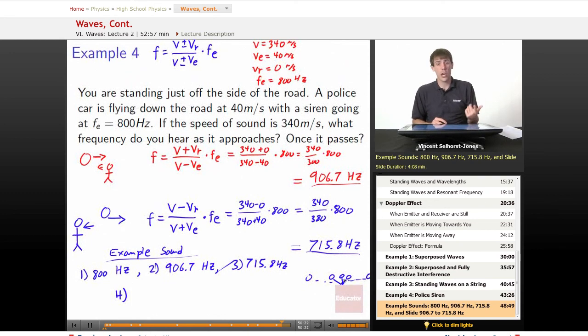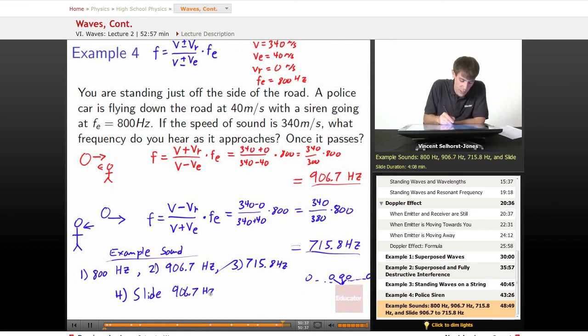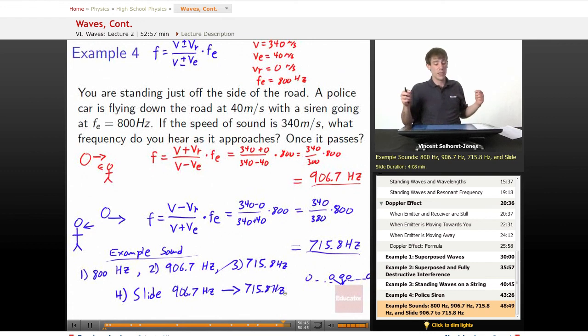And I'm sure you've heard a car siren or something go off that has moved by you quickly while it's been emitting noise, and you've heard this consistent slide sound. And that's what we're going to hear here. So finally, it will hear a slide from 906.7 that will start at 906.7 hertz. It will go on for just a little bit, and then it will slide down to 715.8 hertz. And this gives you some idea of what you might actually hear. All right, so ready for that example sound? Go.